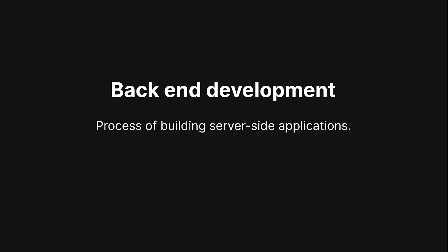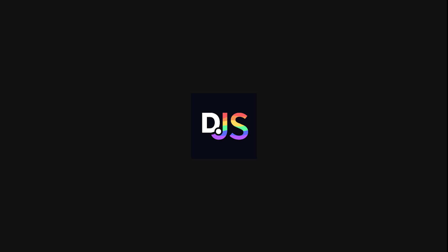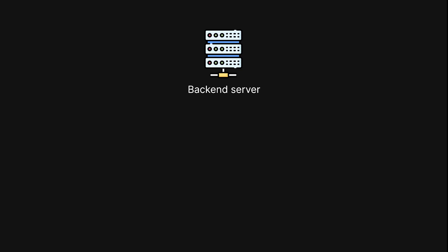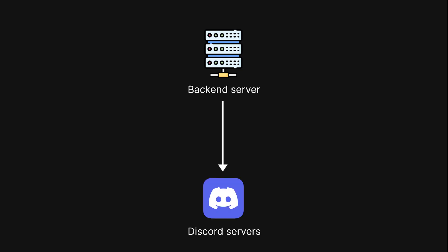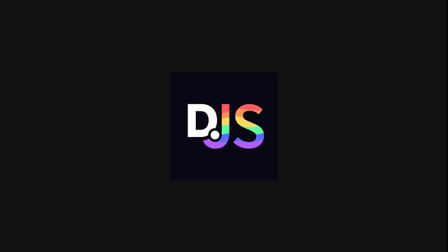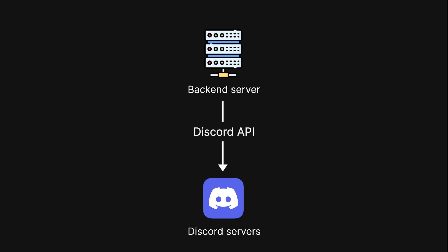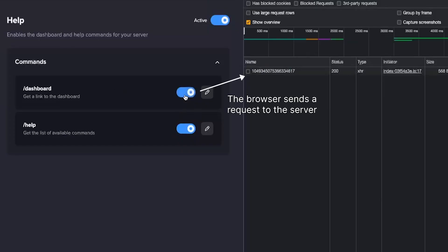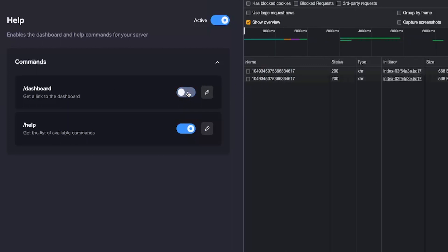Let's now take a look at back-end development. This involves building applications on the server-side. If you've used Discord.js before, it means that your bot was running on the back-end, most likely using Node.js. Node.js is one of the many server-side tools that you can use to run a back-end application. In the case of a Discord bot, a back-end application is responsible for communicating with Discord using the Discord API. Another job that a back-end server has to handle is receiving requests from the front-end — when you submit a form or click a button on the front-end UI, you're usually sending a request to a back-end server to handle that specific action.